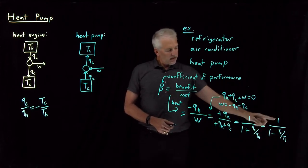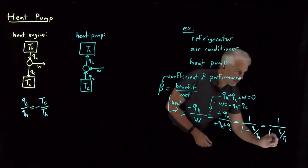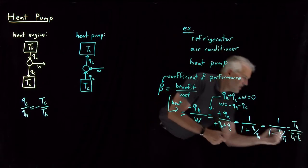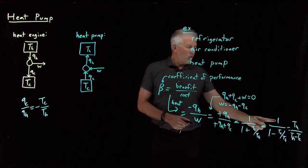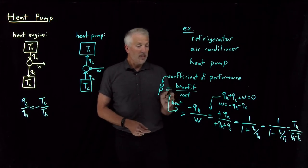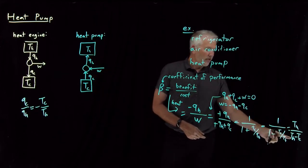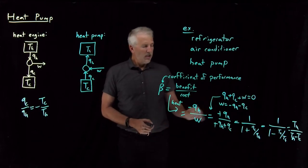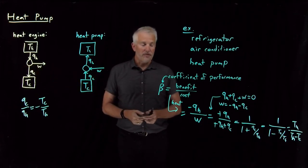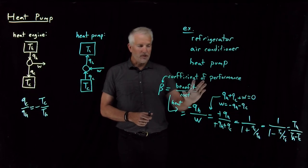Multiplying through by T_H to get rid of the fraction inside a fraction, 1 becomes T_H and T_C over T_H becomes T_C. So the coefficient of performance for a heat pump in heating mode is T_H over T_H minus T_C — hot temperature divided by hot minus cold. This is similar to the efficiency of a heat engine in that it involves a ratio of temperatures, but it's a different combination.